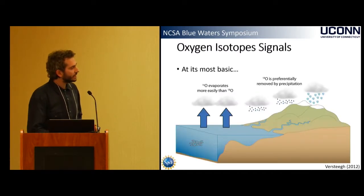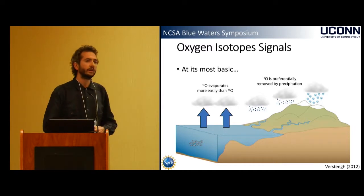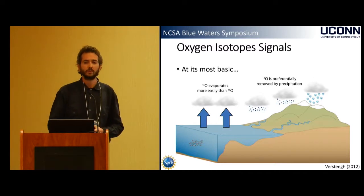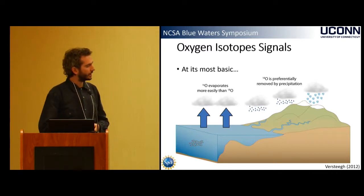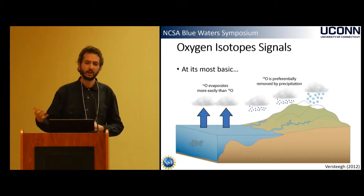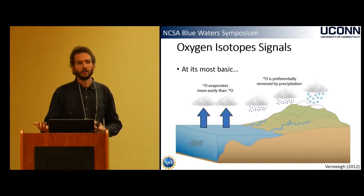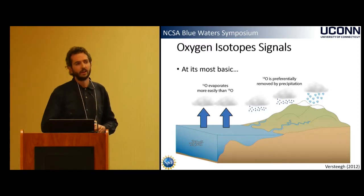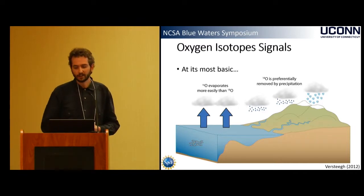At its most basic, you have a source of water — say the ocean with a delta-18O value of around zero. Water evaporates from that surface, and the 16O preferentially goes into the vapor, so the vapor is more depleted than the ocean surface. That vapor then transports somewhere — say over land or up a mountain range — and begins to rain out. The initial rainwater is relatively enriched in 18O, and the vapor becomes more and more depleted as it rains out. You can use this to track hydrologic change in the present day and the past.